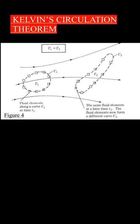Also, by definition, the circulation around curve C1 is RO1 equal VDS. Now let these specific fluid elements move downstream. At some later time T2, these same fluid elements will form another curve C2, around which the circulation is RO2 VDS.